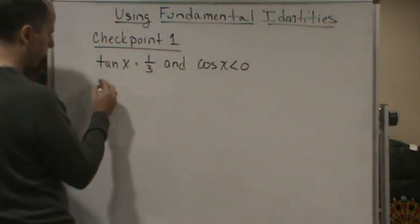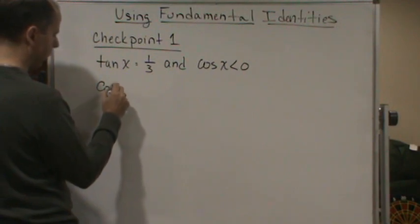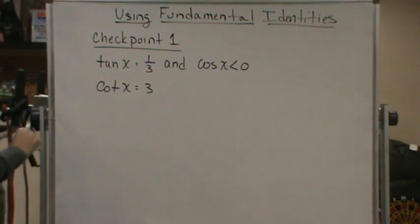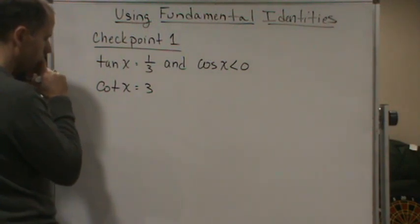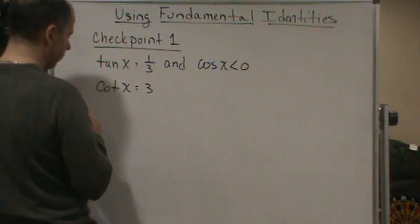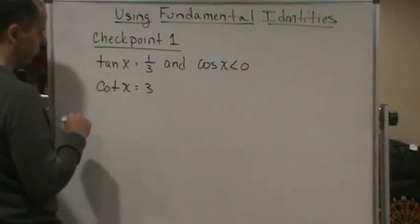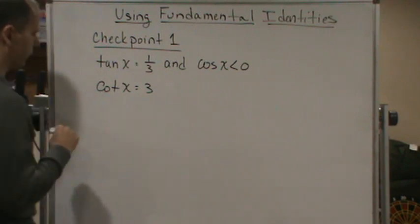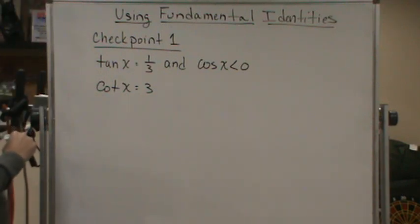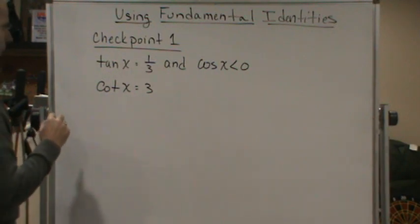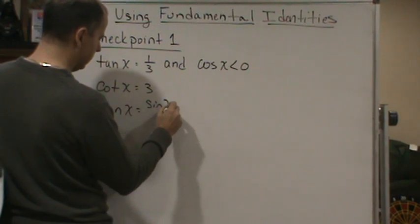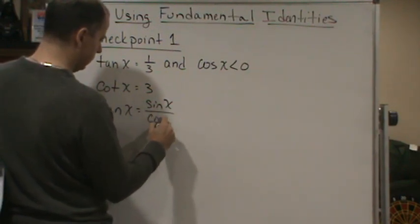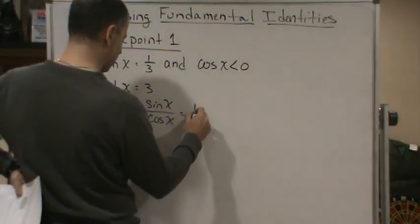Right away we can use the reciprocal functions. We know that cotangent of x is going to be equal to three. And we can also use tangent x equals sine x over cosine x, which equals one-third.